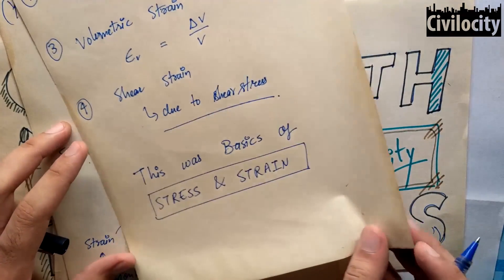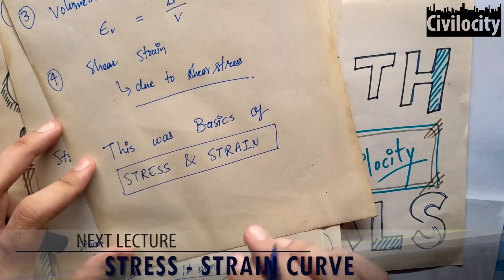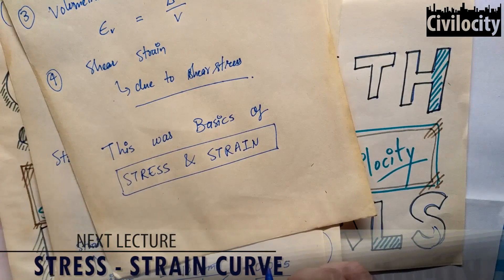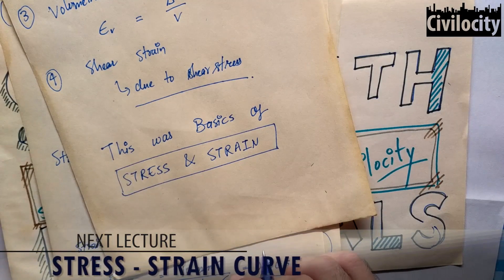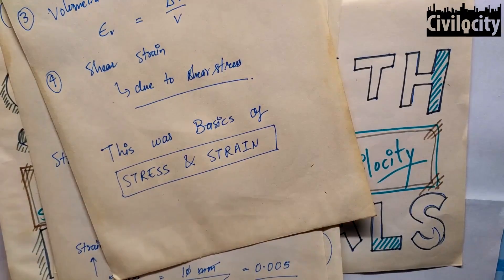In the next lecture, we will talk about stress-strain curve of mild steel in tension, which is done on universal testing machine. Till then, share this lecture as much as you can, help your friends and yourself too. Tell me about this video in the comments and I will see you in the next lecture. Till then, cheers.